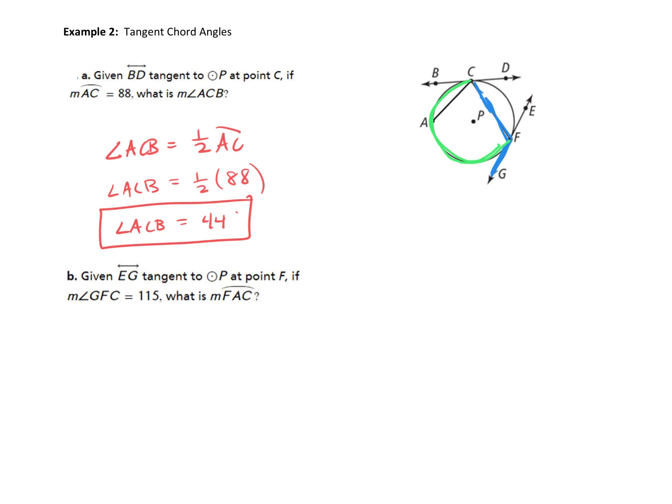So we know that our tangent chord angle, angle GFC, is equal to half of the intercepted arc FAC. So what do we know? They gave us the angle. We know this angle is 115. 115 equals half of its intercepted arc FAC. Now, to figure out what the arc is, let's just multiply. Multiply by 2. 2 times 115 is 230 is equal to, those 2's cancel over here. Arc FAC is equal to 230 degrees. So arc FAC equals 230 degrees.